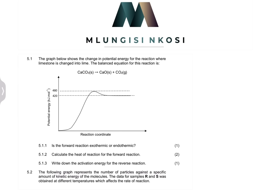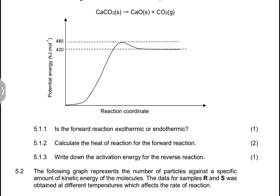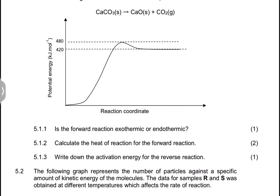So they say the graph below shows the change in potential energy for the reaction where limestone is changed into lime. The balanced equation for this reaction is given as follows. Now, I'm just going to zoom into it for the purposes of this question. They're asking: is the forward reaction exothermic or endothermic?